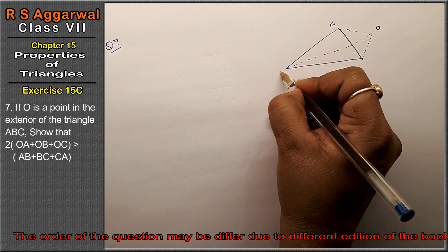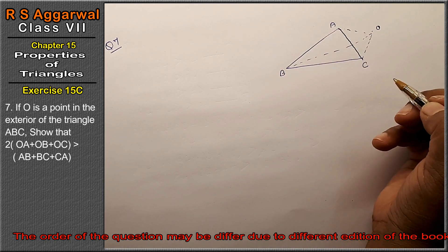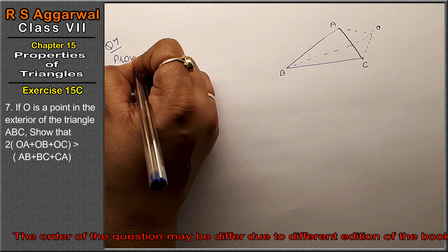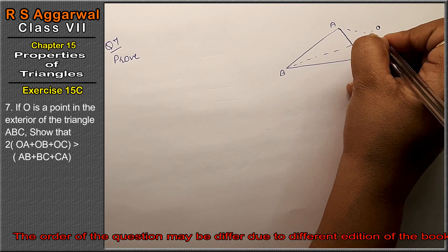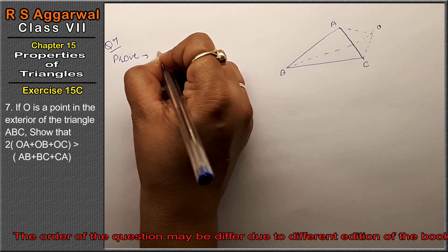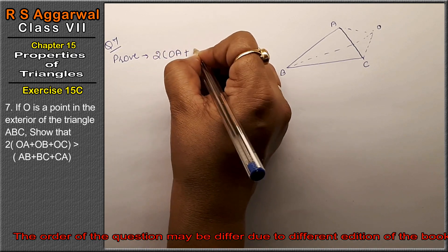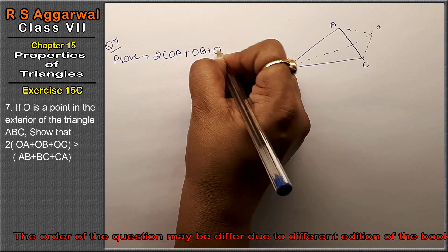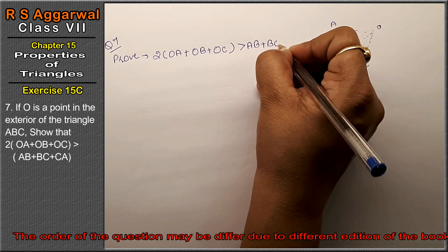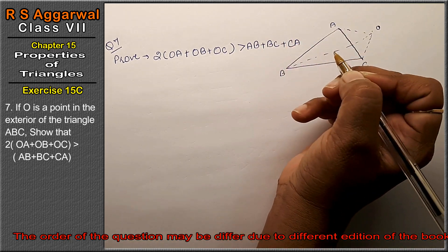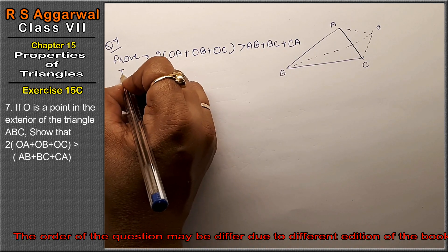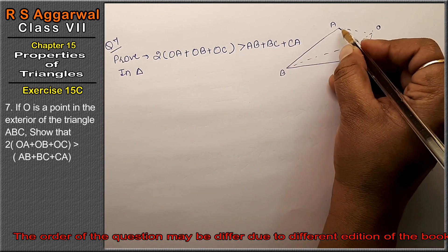O is a point in the exterior of triangle ABC, and all the points are joined. We have to prove that twice of OA plus OB plus OC is greater than AB plus BC plus CA.